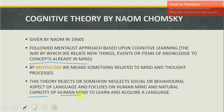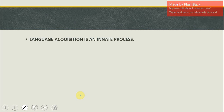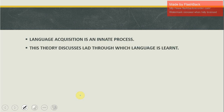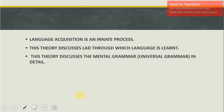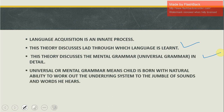Two key points to keep in mind: first, language acquisition is an innate process — a natural, stress-free, unconscious process for the child. Second, this theory discusses the Language Acquisition Device (LAD), through which language is learned, and also mental grammar or universal grammar. Universal grammar means a child is born with a natural ability to work out the underlying system from the jumble of sounds and words they hear.